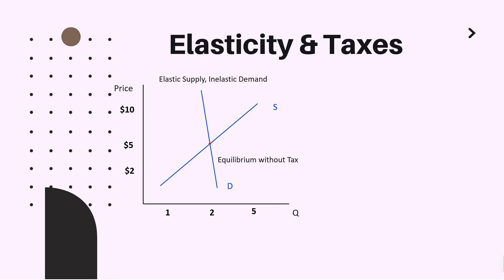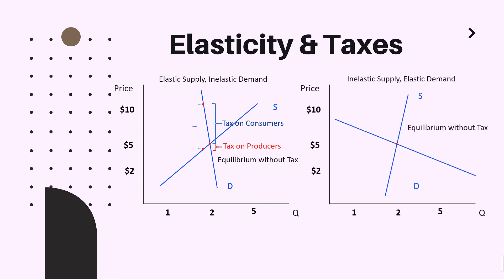Finally, let us discuss elasticity and taxes. The first case is elastic supply and inelastic demand. Let's say the government imposes new regulations increasing the tax rate, and we have a new price a little bit more than ten dollars. Let us understand what the tax incidence is in this case — how consumers and suppliers share the tax burden. As you can see, the upper part of the demand and supply diagram represents the tax on consumers, and the lower part represents the tax on producers. In the case of elastic supply and inelastic demand, the tax burden falls much more on the consumer side compared to the producers.